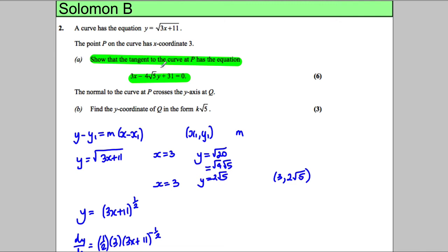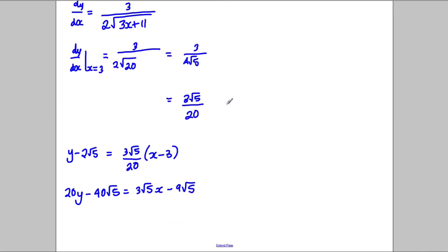And let's look up here to see what way we want it, and we want 3x, we want it in that form there with a 3x in it. So what we're going to do is, we're going to subtract the 20y and subtract this off both sides, so we get 0 equals 3√5 x subtract 20y, and then we get negative 9√5 plus 40√5, which would be positive 31√5.